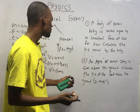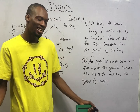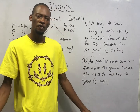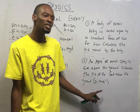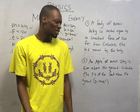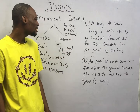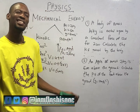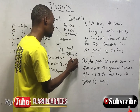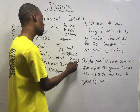For the next question: An object of mass 2 kg is 5 meters above the ground. Calculate the potential energy. We are given acceleration due to gravity as 10 m/s². So: M = 2 kg, H = 5 m, g = 10 m/s². Potential energy = MGH = 2 × 10 × 5 = 100 joules.